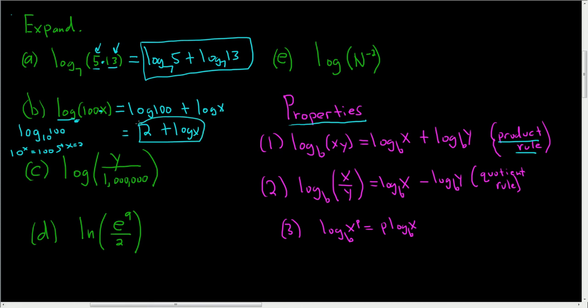So there it is. This one is a quotient rule. So it will be log of y minus log of 1 million. That's a lot of zeros. So this is just log of y. And log of 1 million is 6. So this is minus 6. And that's the answer.